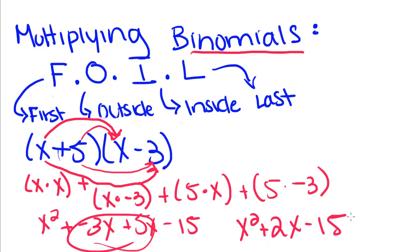And your binomial, or excuse me, your trinomial answer that you get for multiplying two binomials is always going to come in this form, where you have the two middle terms combined, so you only have one term.